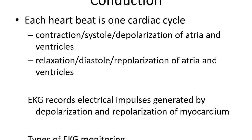Each heartbeat is one cardiac cycle — the contraction, systole, and depolarization of the atria and ventricles, which are interchangeable terms. Relaxation, diastole, is repolarization of the atria and ventricles. To tell the difference between depolarization and repolarization: repolarization equals relaxation — they begin with the same two letters. The EKG records those electrical impulses that happen with the depolarization and repolarization of the myocardium.